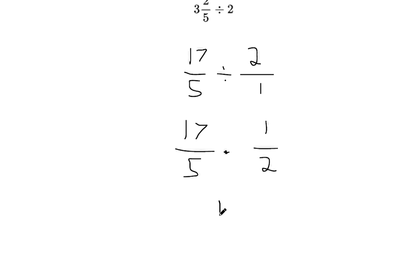So now we can multiply straight across the top and straight across the bottom. And then this is the part where I'd want to see if I could simplify, but 17 is prime. There's nothing you can divide into the top and into the bottom.